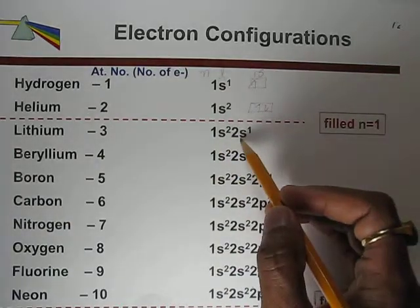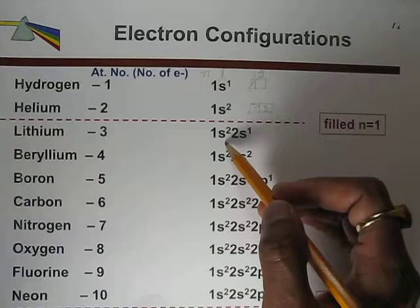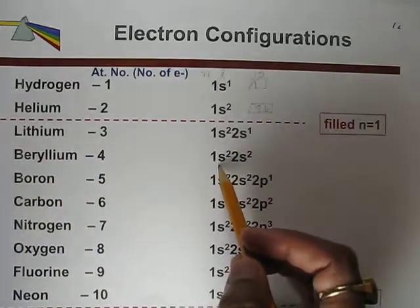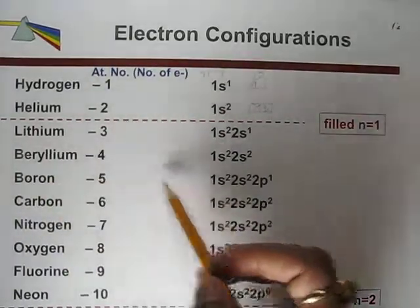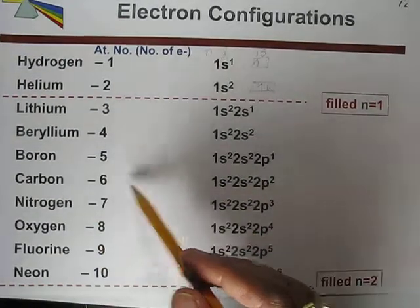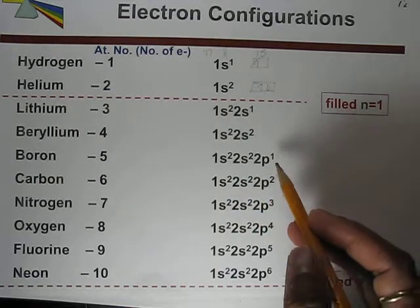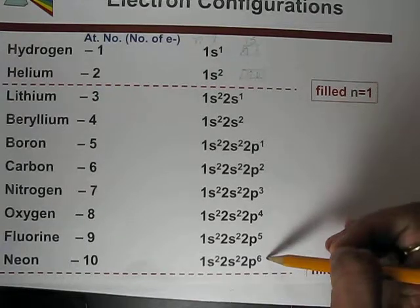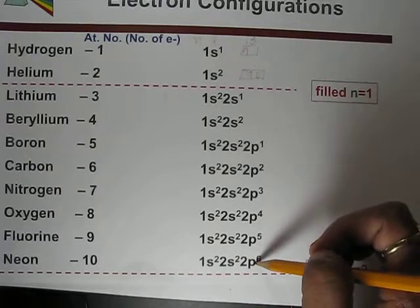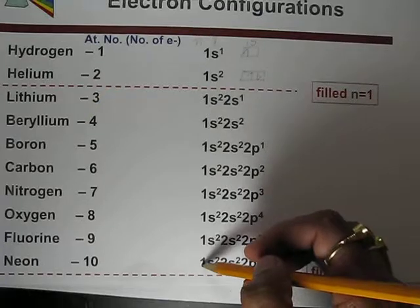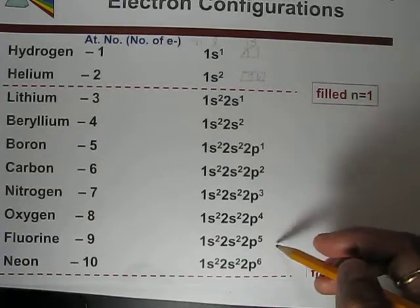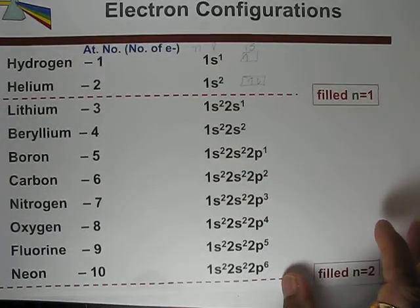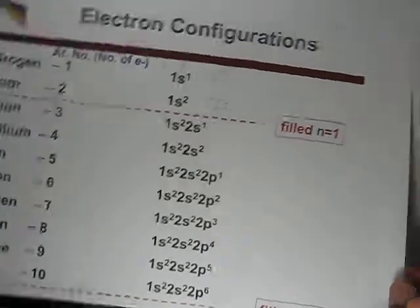Lithium is 1s2 2s1, because the s orbital can hold only two electrons, so a new shell is needed. Beryllium has four electrons: 1s2 2s2. Boron has five: 1s2 2s2 2p1. Carbon has six electrons: 1s2 2s2 2p2. The p orbital is slowly filled up to a maximum of six electrons, after which we move to the next subshell.